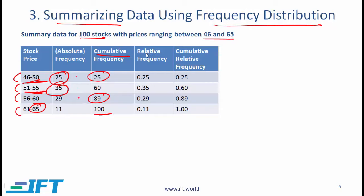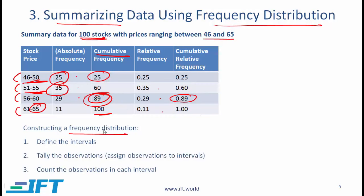Relative frequency shows how many stocks are in each interval relative to the total. With 100 stocks and 25 in the first interval, the relative frequency is 25/100 = 0.25. Cumulative relative frequency takes the cumulative frequency and divides by 100 — so cumulative frequency of 89 gives a cumulative relative frequency of 0.89. To construct a frequency distribution, we first define the intervals, then tally and count the observations in each interval.